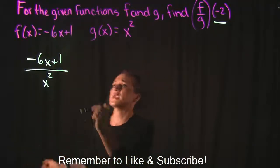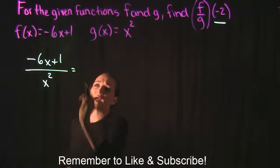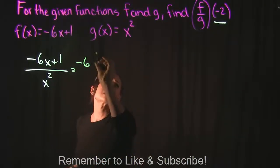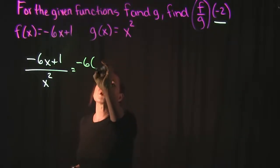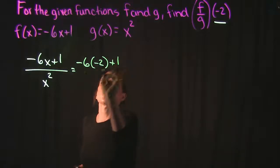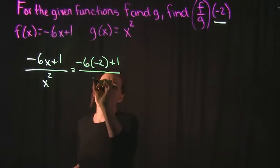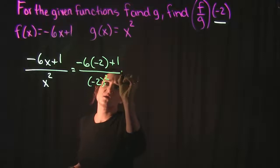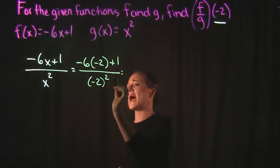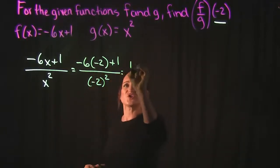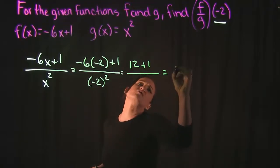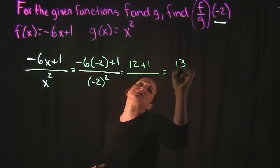I already have the division written out, so let me go ahead and plug in negative 2. In our numerator, that's negative 6 times negative 2 plus 1, over x squared which is negative 2 squared. In the numerator, multiply before you add: negative 6 times negative 2 is positive 12, and 12 plus 1 is 13.